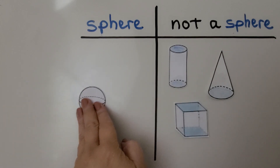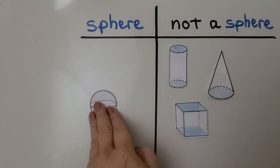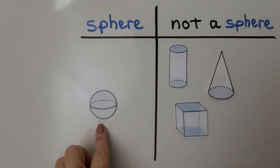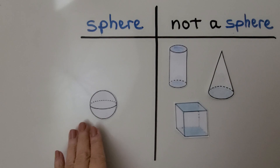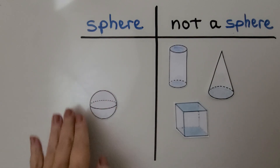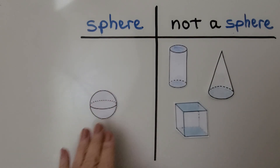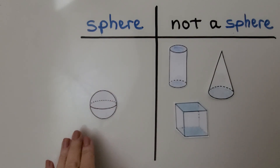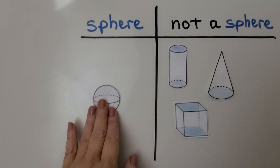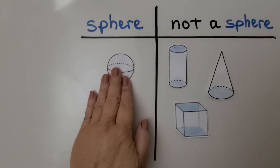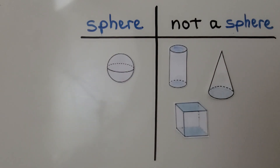Is this a sphere? Yes, it's round with a curved surface — that is a sphere. It's like a ball.